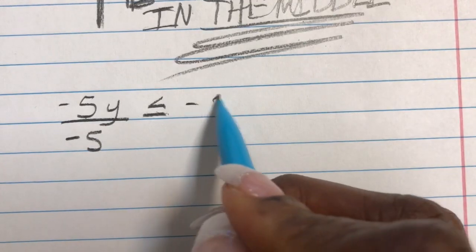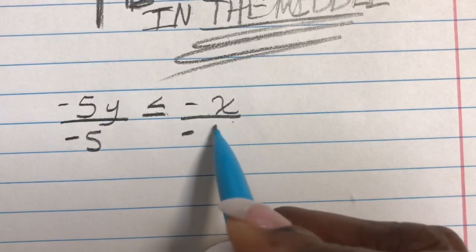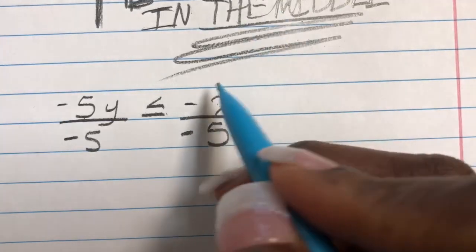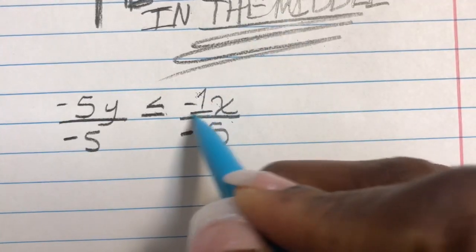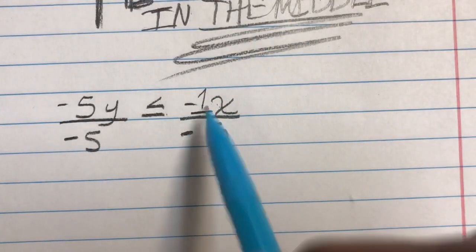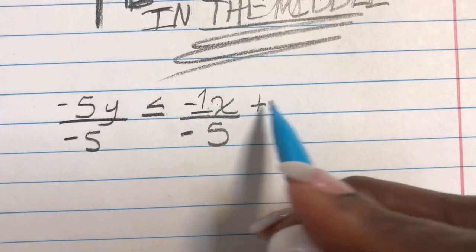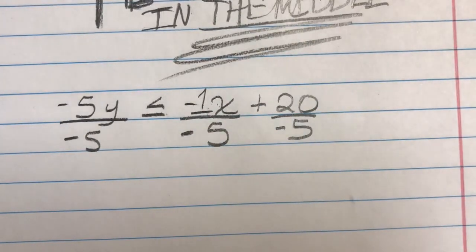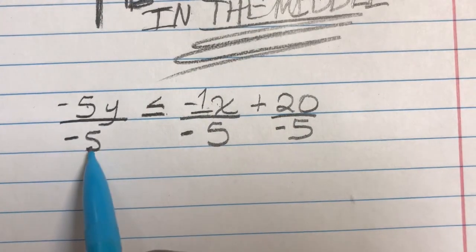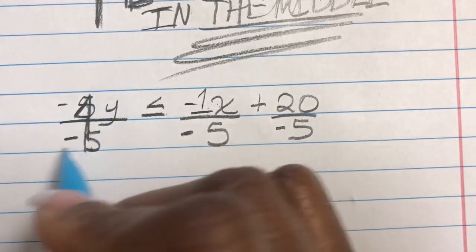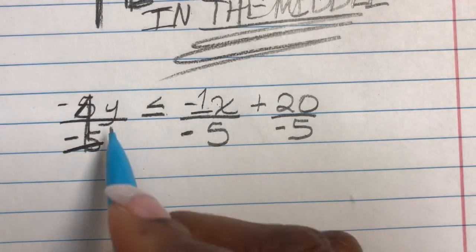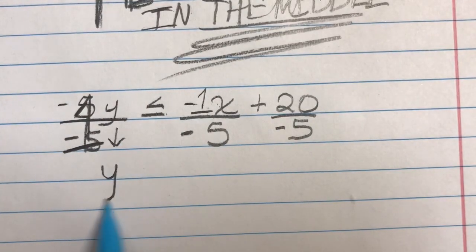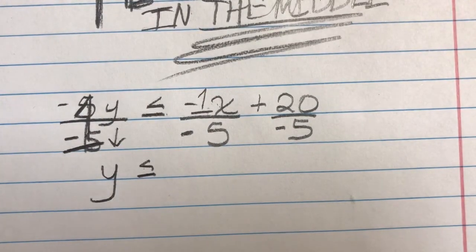I had a negative x here. I had a negative 5. In front of this negative x, there's an imaginary 1. If you see nothing, put a 1 there. Plus 20 over negative 5. A negative 5 divided by negative 5 is a 1. So I'm left with y. I've already flipped my inequality.